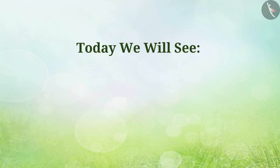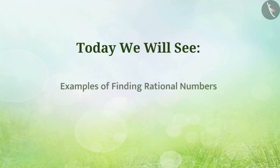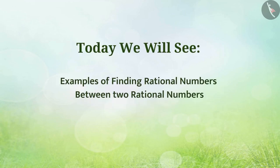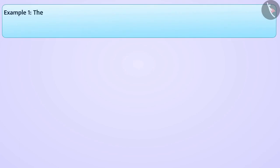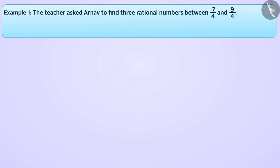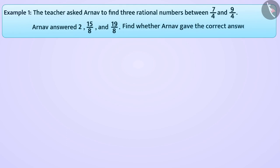Today we will see examples of finding rational numbers between two rational numbers. The teacher asked Arnav to find three rational numbers between 7 by 4 and 9 by 4. Arnav answered 2, 15 by 8, and 19 by 8. Find whether Arnav gave the correct answer or not.